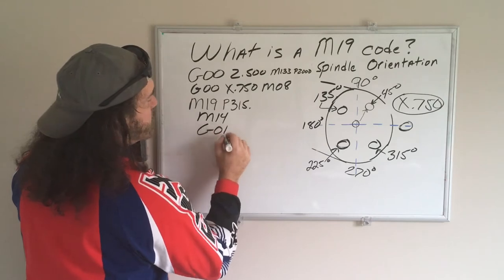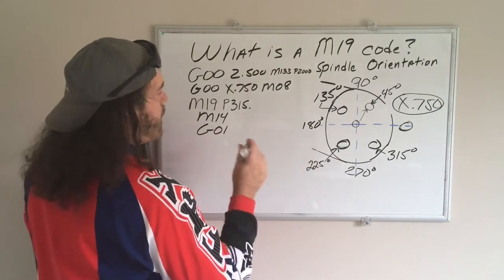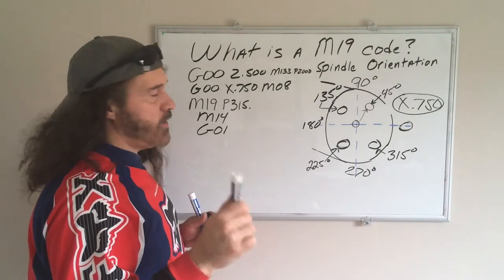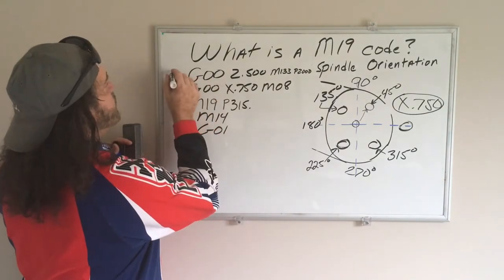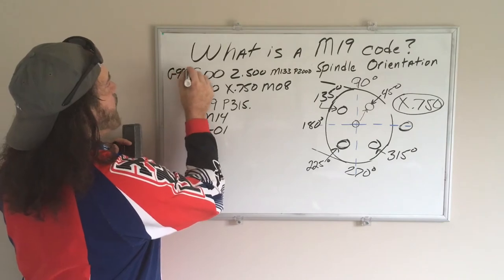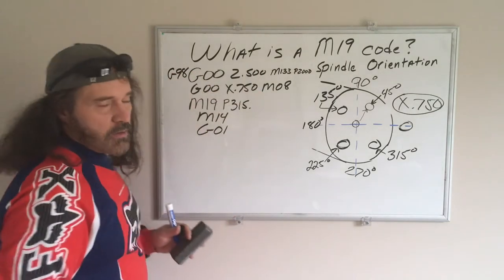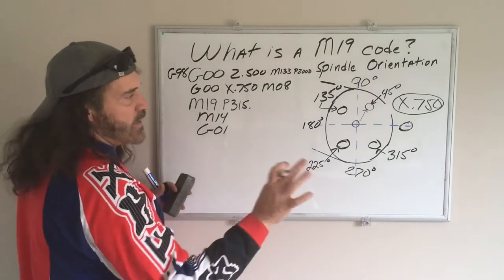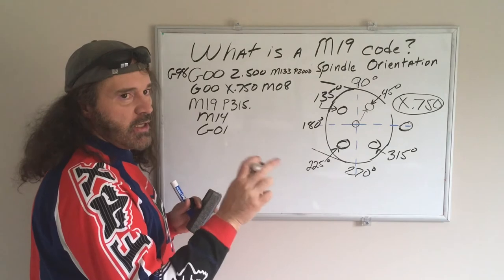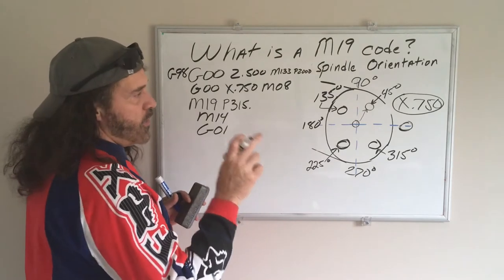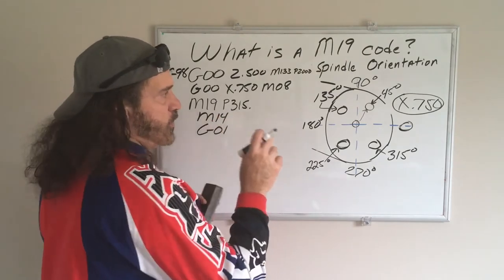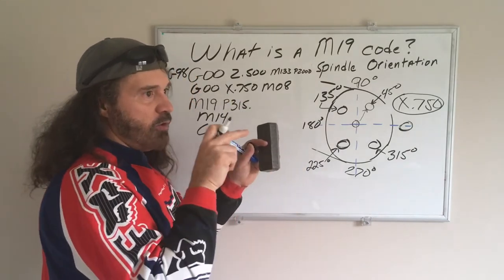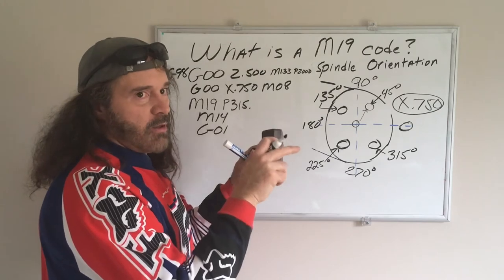Then I would do a G01, which is a feed move. But you have to remember you have to be in inches per minute, so we'll say G98 on this line. I apologize for being sloppy. Because with a lathe you're always in G99 mode, but when you're doing this stuff using live tooling, the spindle is locked, so it's almost acting like a mill. You have to be in inches per minute.